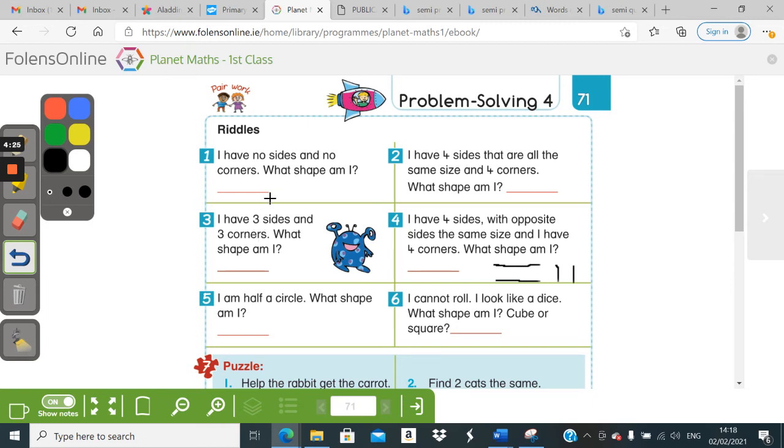And six. I cannot roll. I look like a dice. What cube am I? A cube or a square? Well, I'll give you a hint with this one.